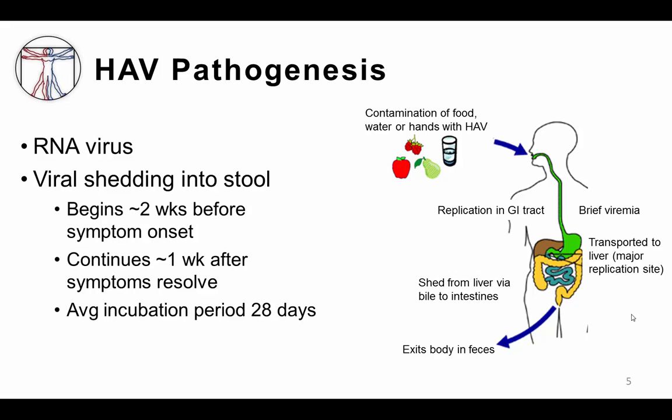Importantly, the virus typically begins shedding into the stool before the liver is damaged enough to give a person any symptoms or signs of infection. The average incubation period for this virus is about one month, so even before a person begins to feel sick, they may have been infectious to others for several weeks.